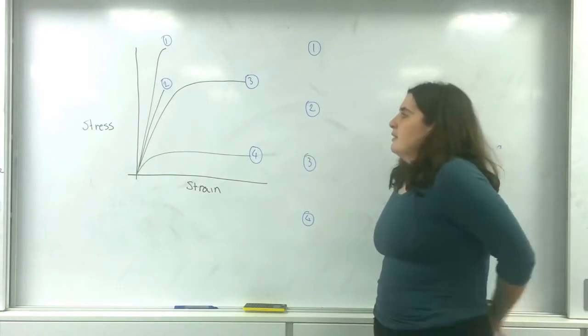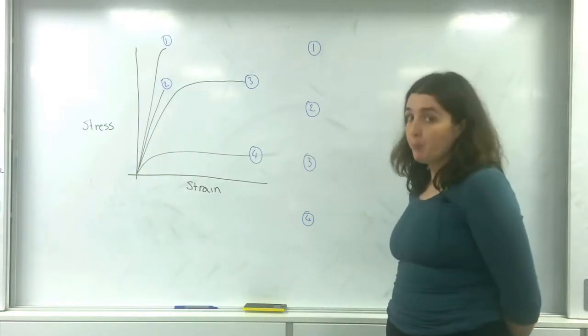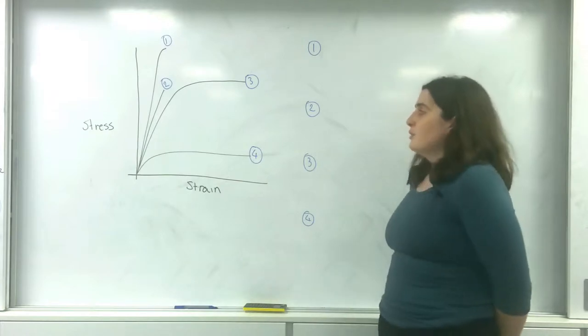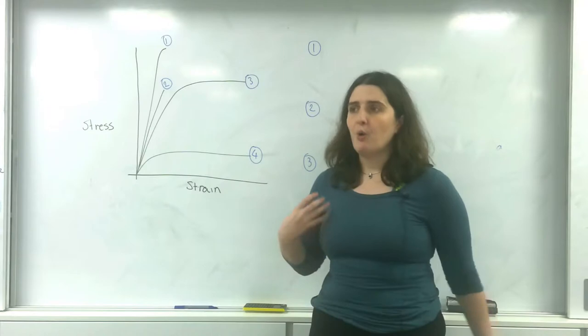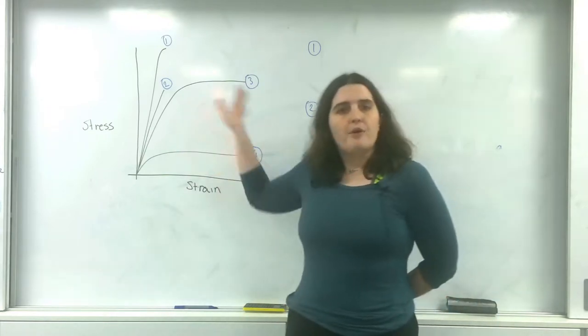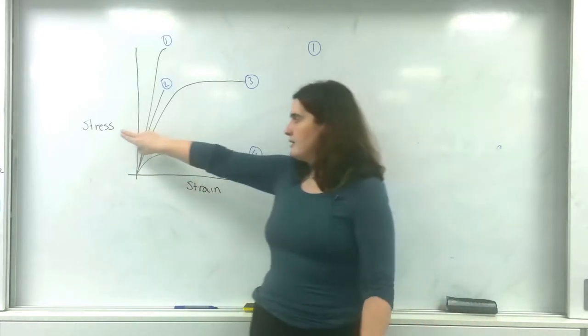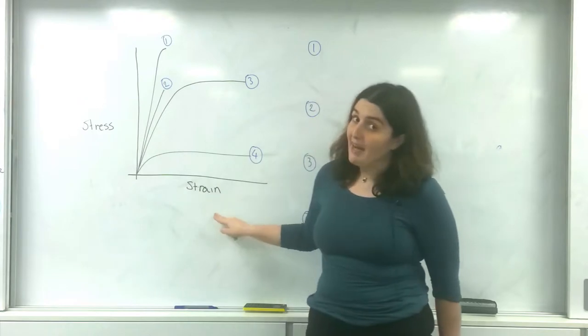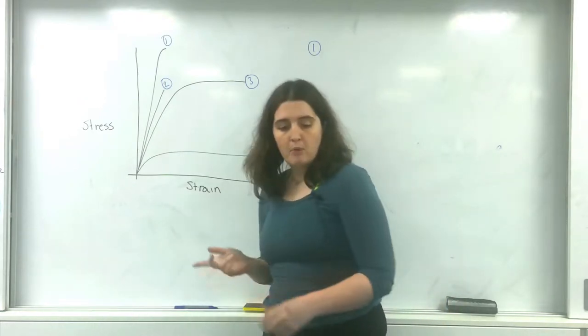So what I have here is about three or four different materials, all that have different properties. And what's interesting about a Young's Modulus Graph is I can actually interpret quite a lot of information about the properties of materials from the graph that is produced. Now just a reminder, the Young's Modulus Graph is stress versus strain, and the gradient of this graph is the Young's Modulus.